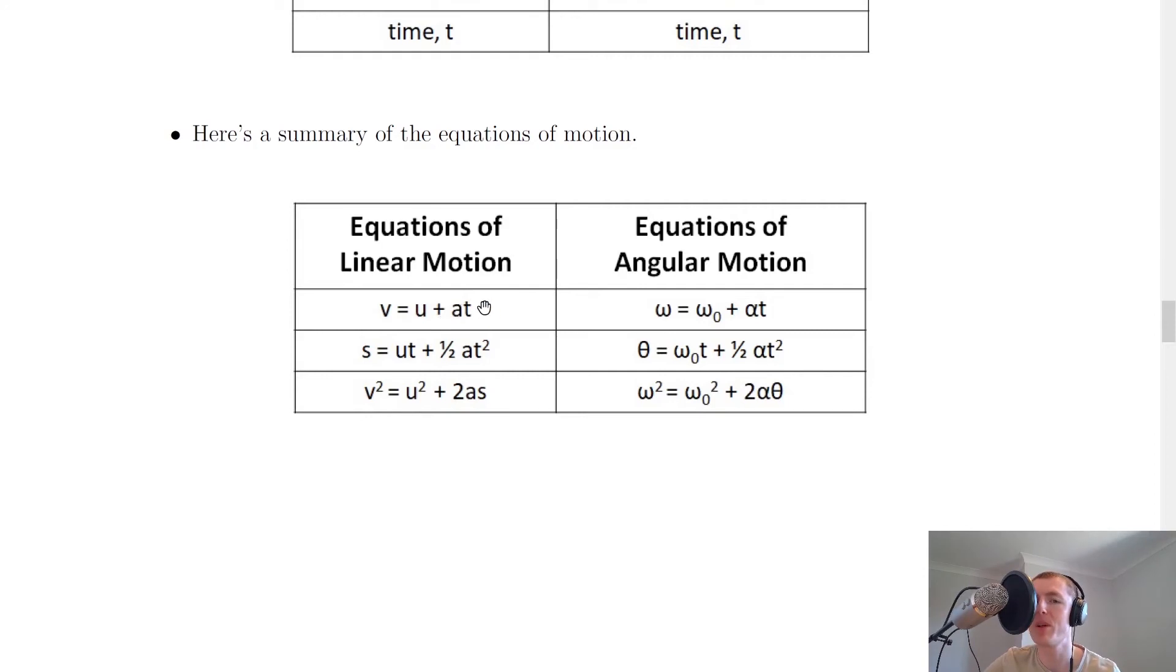So we have v equals u plus at for linear motion and omega equals omega 0 plus alpha t for angular motion.